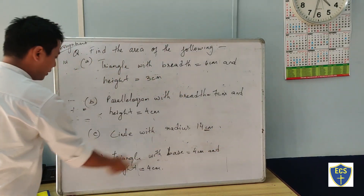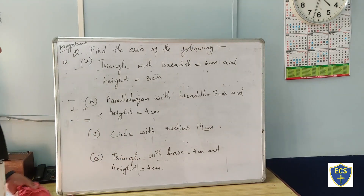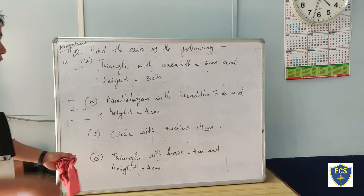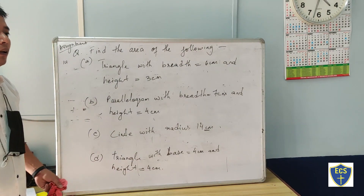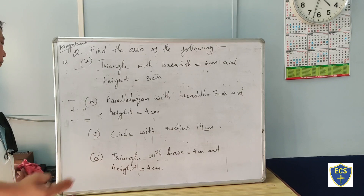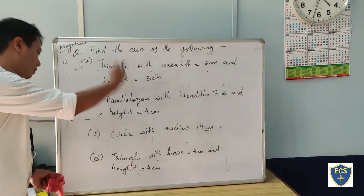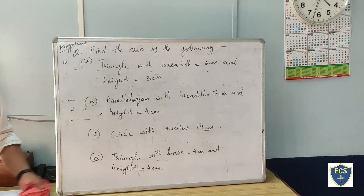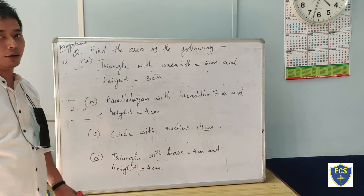The base is 4 centimeters and height is equal to 4 centimeters — you have to find the area of a triangle. I already gave you the formula, so this is your assignment. That's enough for today, thank you.